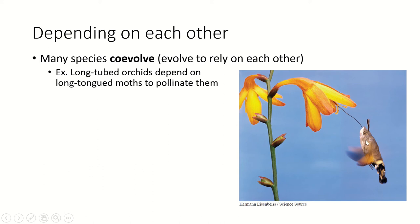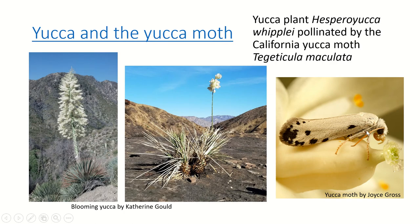Why does that benefit them both? The moth doesn't have to share this food source with any other organisms because nothing else can get its tongue back there to reach that nectar — so it has a secure food source as long as these orchids are around. The orchid, because it isn't attracting lots of different pollinators, won't get pollen from other plants on its reproductive parts, so it's only going to be pollinated by itself. That's a really important force that has shaped both the flower and the moth — an example of co-evolution.